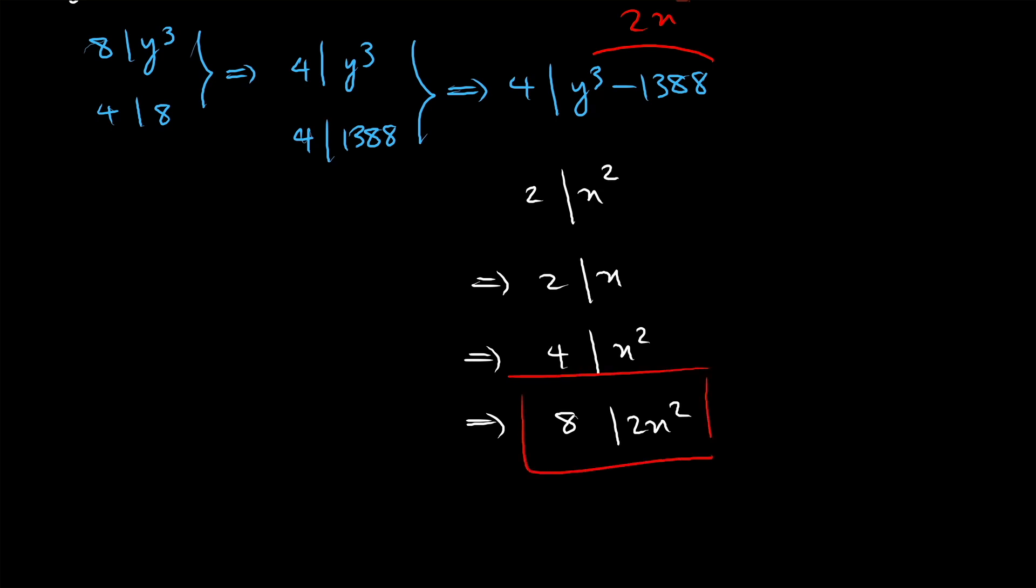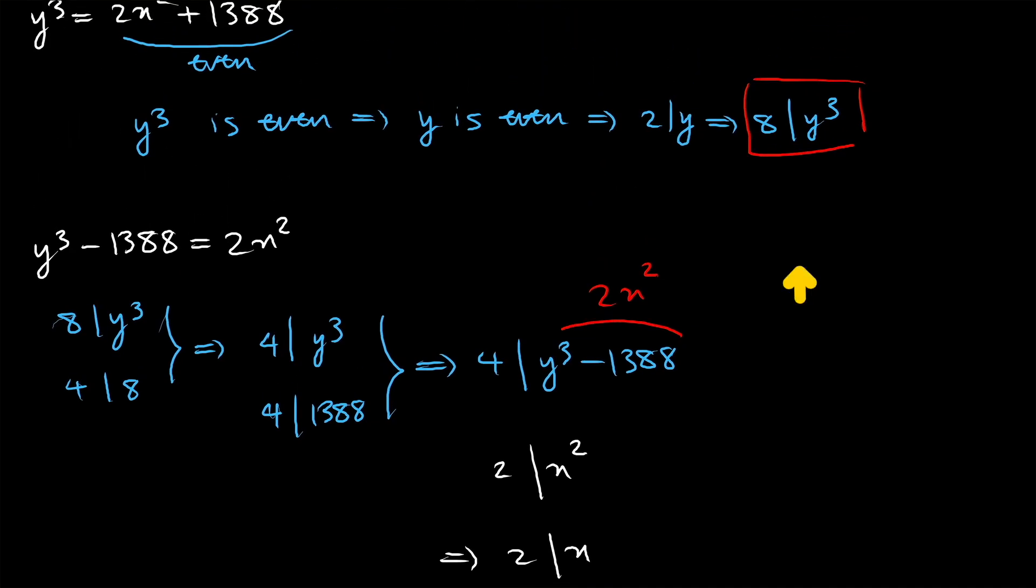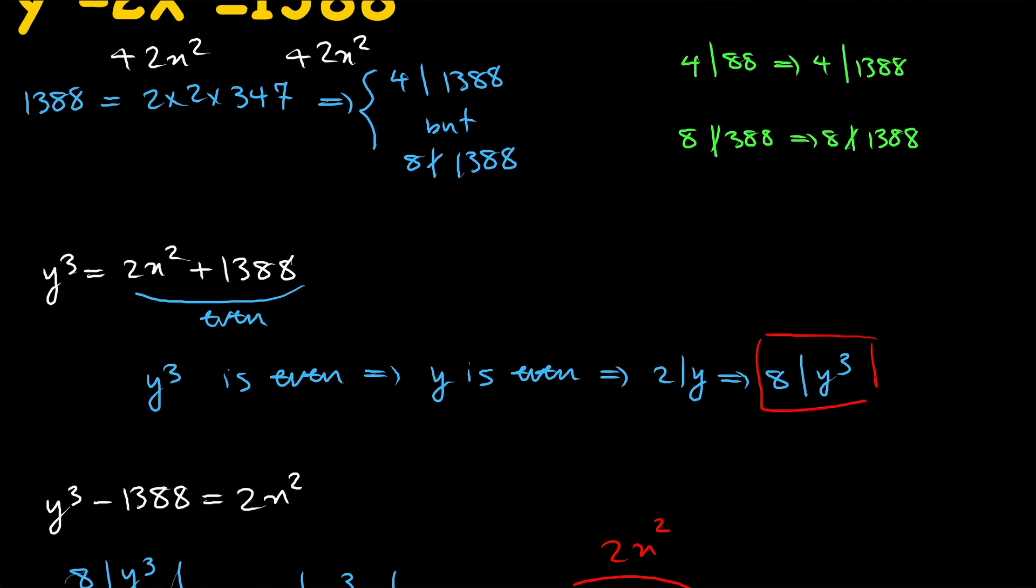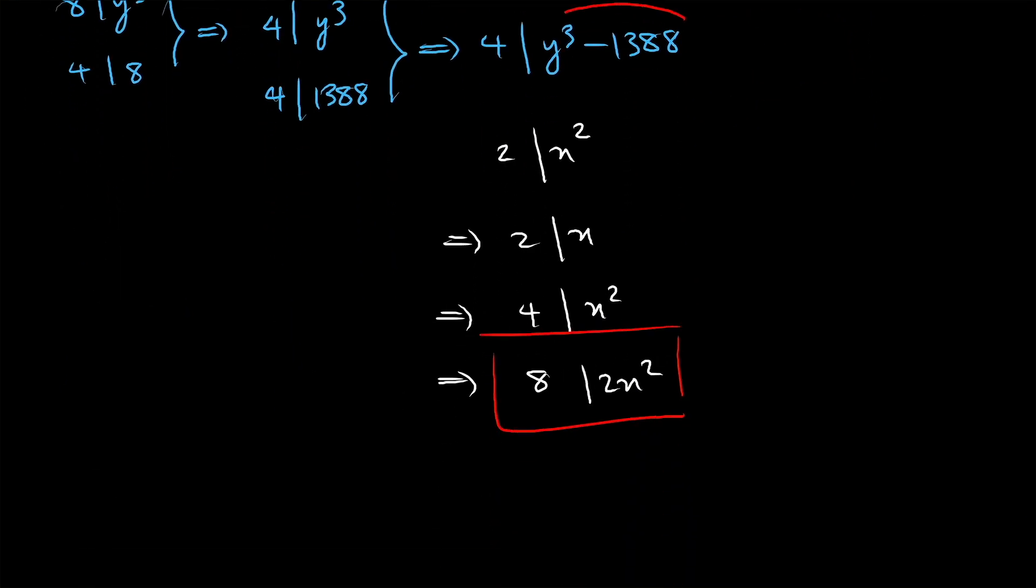So we have found out that 2x squared is divisible by 8, y cubed is divisible by 8, but 1388 is not divisible by 8. So let's talk about that.